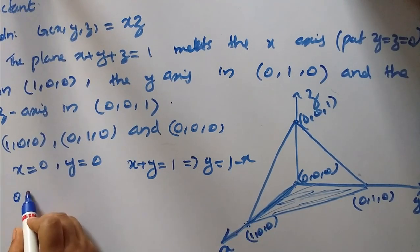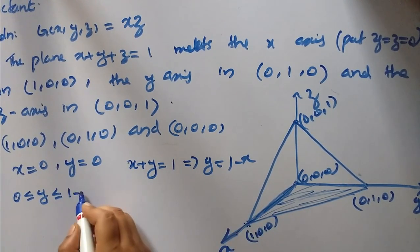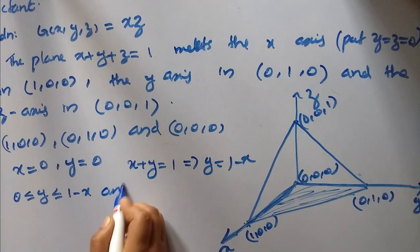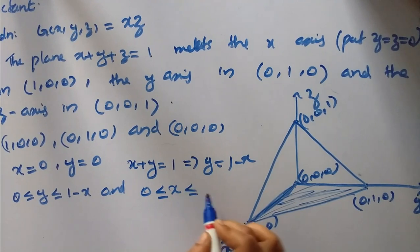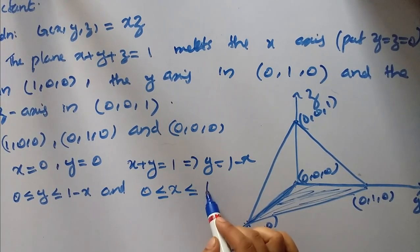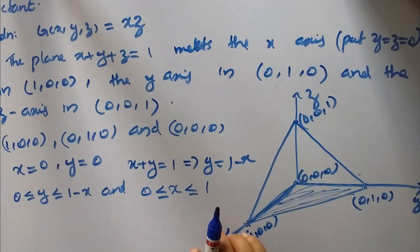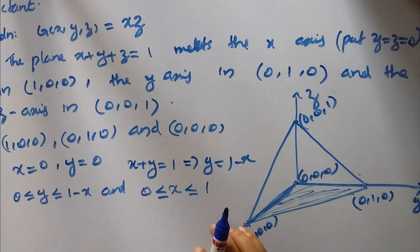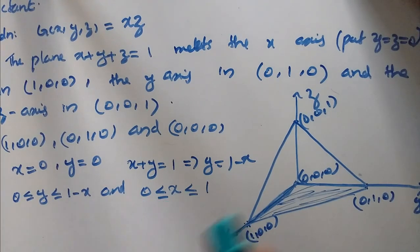The region R is completely determined by the inequalities: 0 less than or equal to y less than or equal to 1 minus x, and 0 less than or equal to x less than or equal to 1.